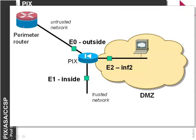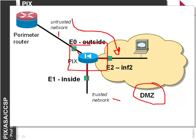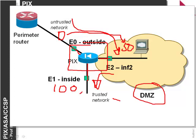The PIX firewall tries to simplify security with three zones: untrusted, trusted, and DMZ — three main connections. Nothing is trusted from outside to go to the DMZ, and nothing is trusted from the DMZ into the inside zone. Each port is given a security level: inside is typically 100, DMZ might be 50, and outside is 0. Traffic is not allowed to flow from a lower security level into a higher one, so traffic flows from inside to DMZ and from inside to outside, but not in the other directions.